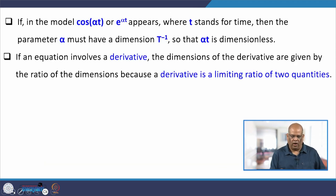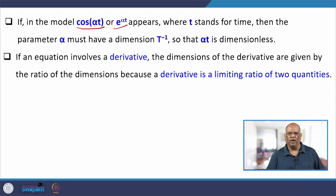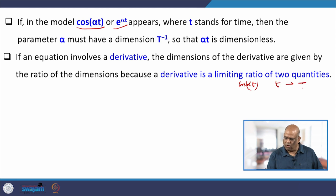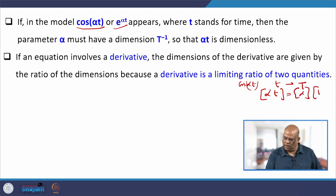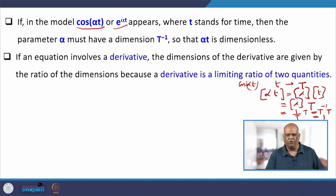If a model contains a term like cos(αt) or e^(αt), where t is time, and we want this quantity to be dimensionless, then since t has dimension T, alpha must have dimension T⁻¹ so that αt becomes dimensionless. Similarly, in the exponential case, alpha must be 1/t so that αt is dimensionless.